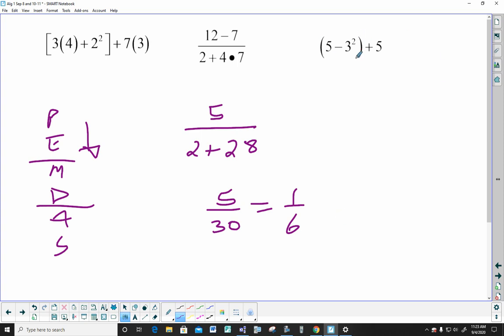This one, a little bit shorter than what that was. Do the work inside first. I have to take care of that exponent. 25 minus 9 plus 5. So I've got 25 minus 9, what's that, 16? There's nothing else outside the parentheses, so I can just bring these together. So your answer is 31.